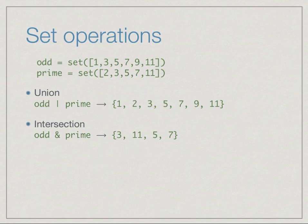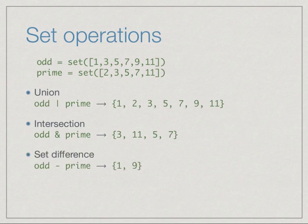If we ask for the intersection using the ampersand, we get those numbers which are both odd and prime — in this case 3, 5, 7, and 11. Set difference asks for those elements that are in 'odd' but not in 'prime' — in other words, odd numbers that are not prime. In this collection, 1 and 9 are examples of such numbers.